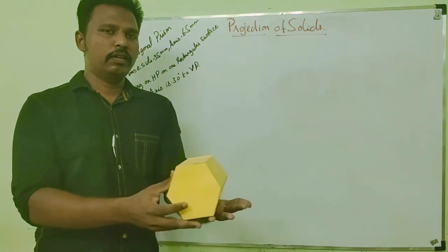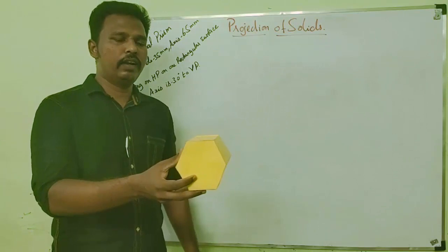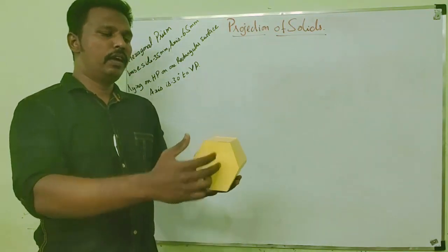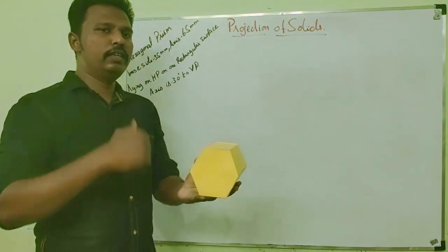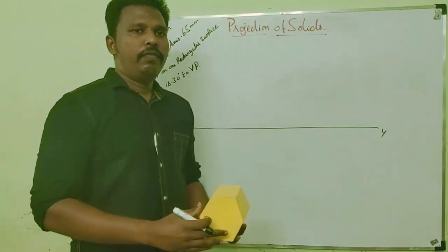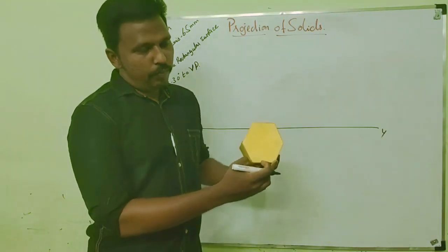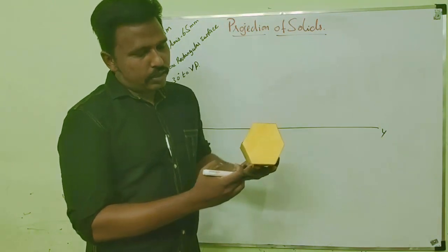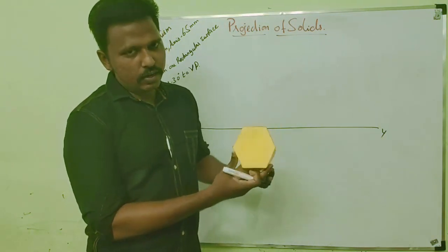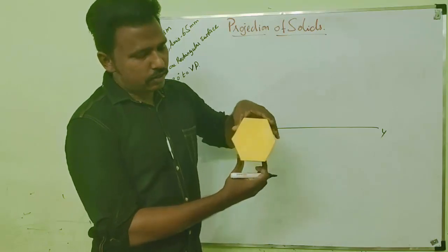Now we have to decide which one is the base view and which one is the lateral view. Here obviously the front view is the base view and the top view is the lateral view, so we have to start from the front view. In the front view we have to keep a base edge parallel to XY, because it is resting on HP with one of its rectangular surfaces.